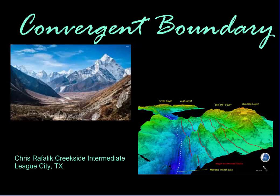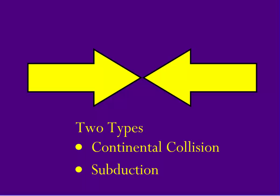Alright, let's talk about convergent boundaries. Convergent boundaries are the types of boundaries where we see two plates moving together, or converging. There are two types of convergent boundaries: continental collision and subduction.